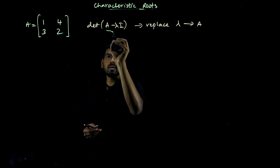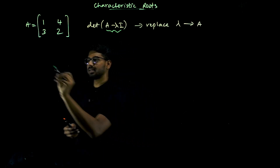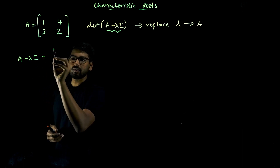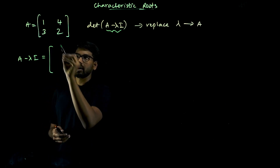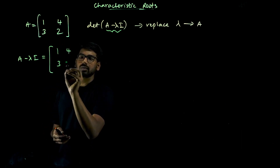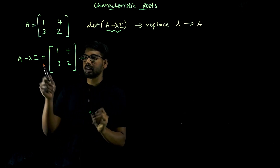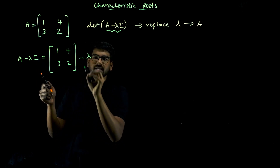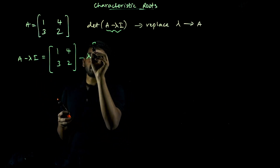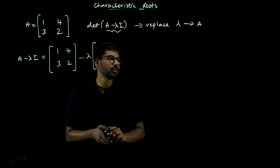A minus lambda I: A is the matrix [[1, 4], [3, 2]], lambda is just a scalar — it's a number — times I, the identity matrix.